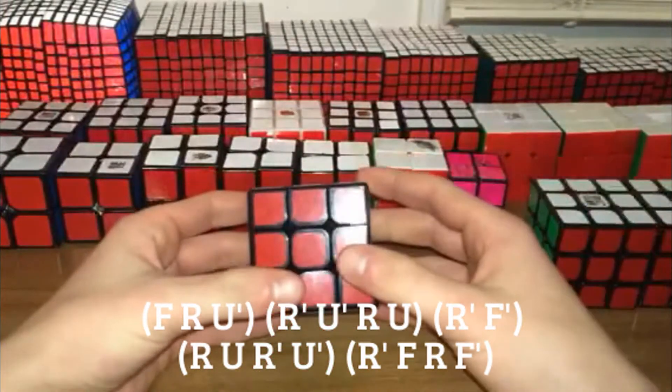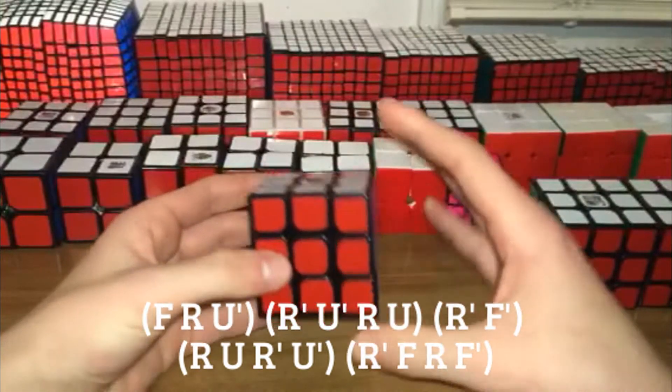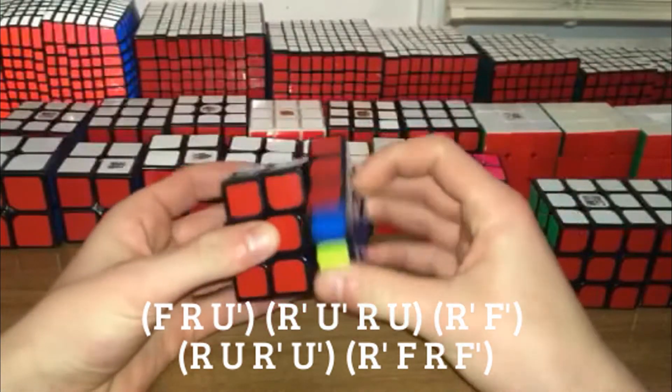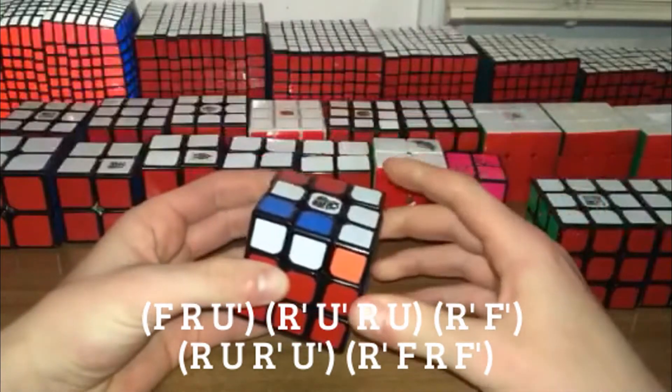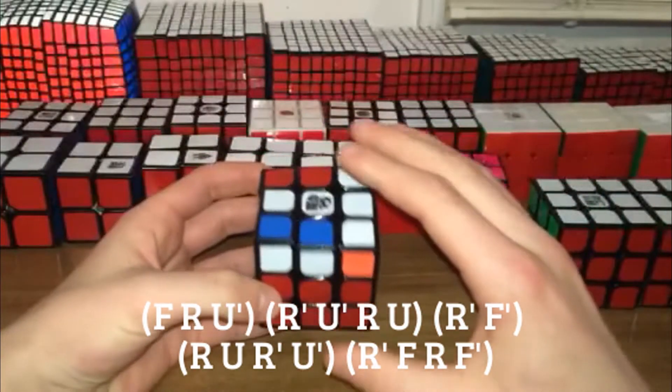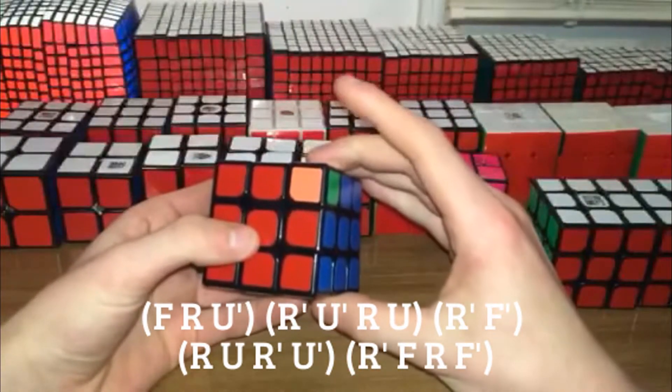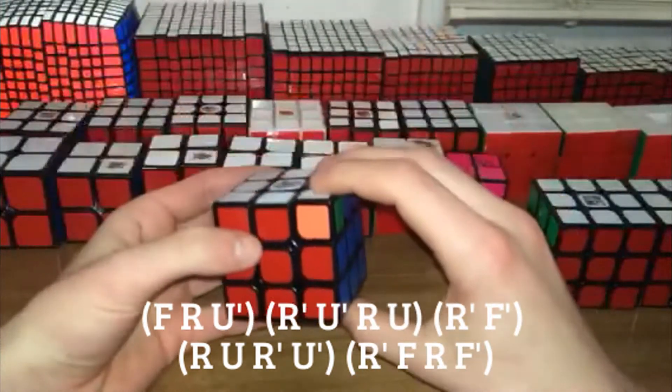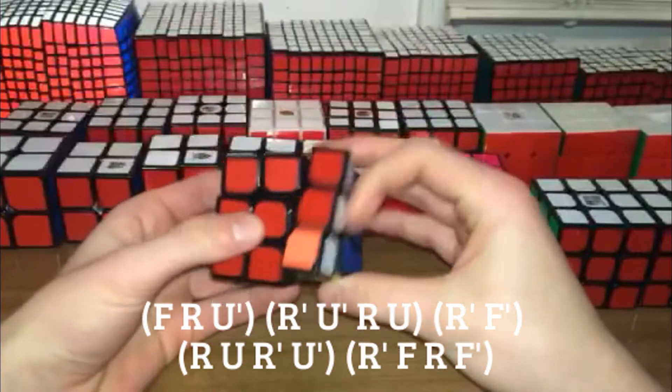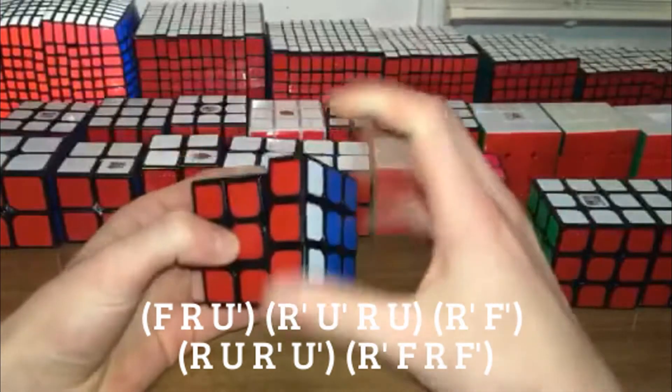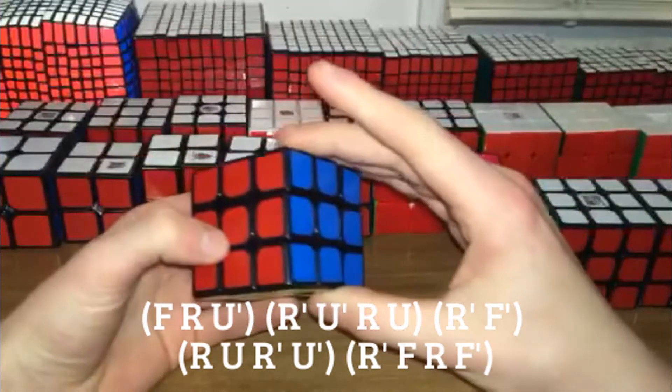It's a pretty fun and easy algorithm to do. This is one of my favorites. It's just this move here, and then if you know the OLL T-perm, you just do that. It's really easy to recognize. Everything about this is pretty easy. Just these simple moves and then the OLL T-perm and you can do it really fast.